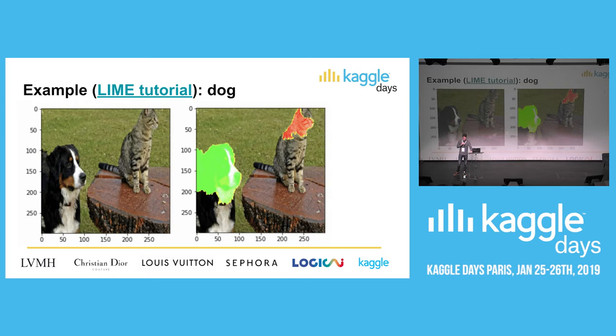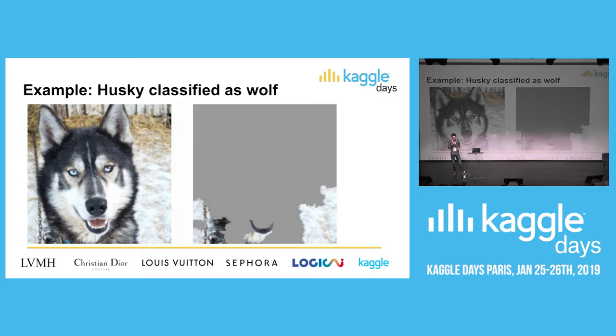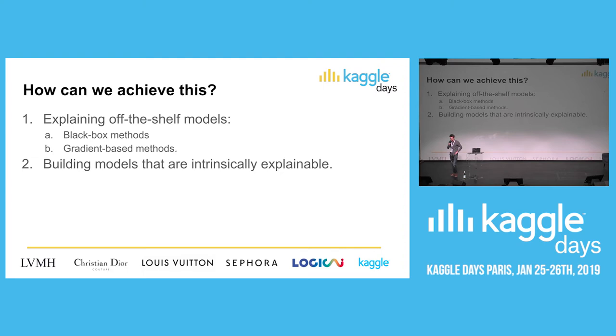Another example you've already seen: a husky classified as a wolf incorrectly due to the snow in the background. Seeing this explanation, we see there is an issue with the data set that needs to be fixed.